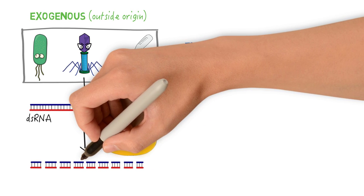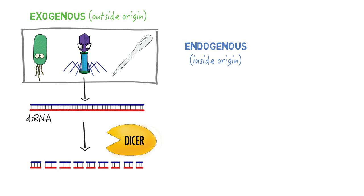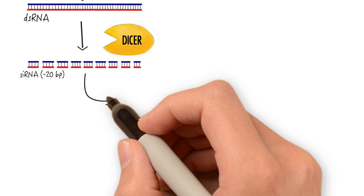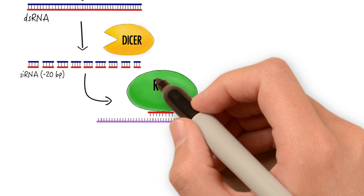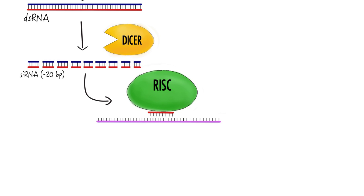These small chunks of dsRNA are called small interfering RNAs, or siRNAs. Afterwards, the antisense strand of the siRNA attaches to a protein complex called RISC, or RNA-induced silencing complex.